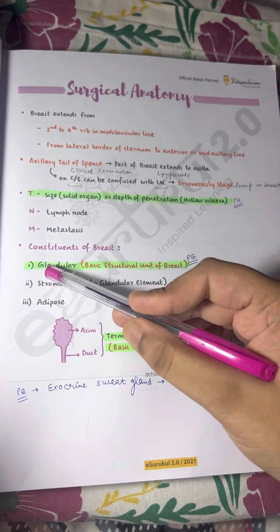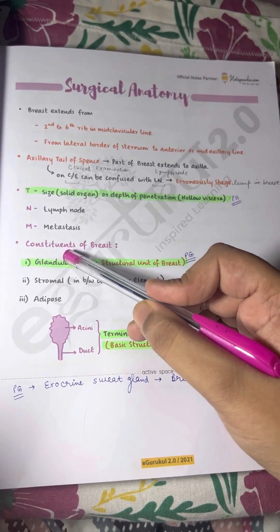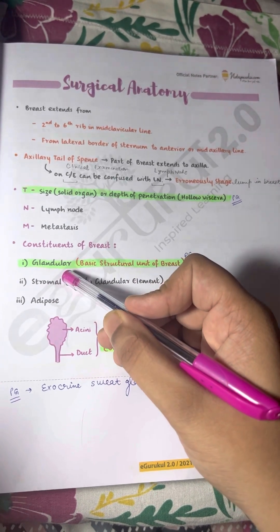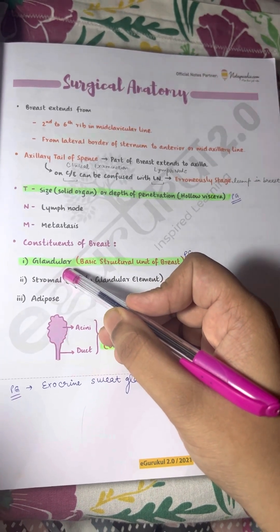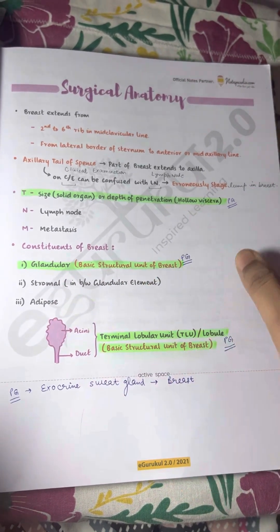The breast is composed of three elements: glandular tissue, stromal tissue which lies between the glandular elements, and adipose tissue.